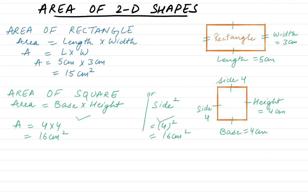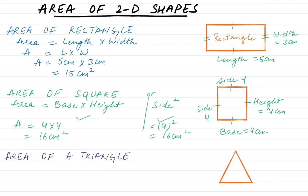Let's do the area of another 2D figure — let's take a triangle. How can we find the area of a triangle? Let's draw the triangle. We need to draw a perpendicular from one vertex to the base. This is the base and this is the height, which we need to find the area.